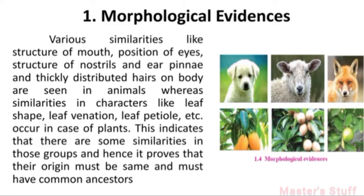These similarities in different organs and parts seen in different organisms indicate that these different groups are similar to each other in some ways. This proves that their origin must be the same — their ancestors must be common. Morphological Evidence means nothing other than similarities between characters and structures across groups.